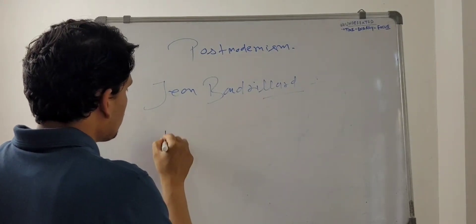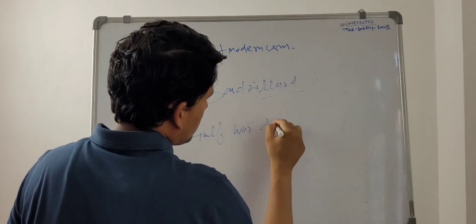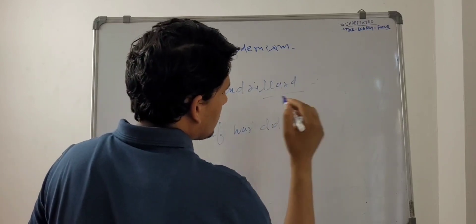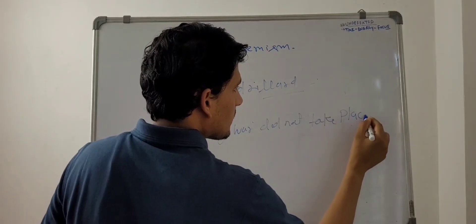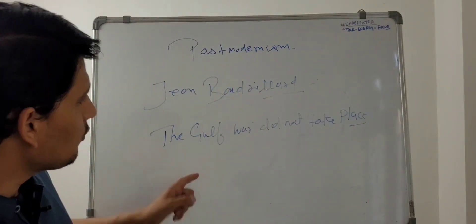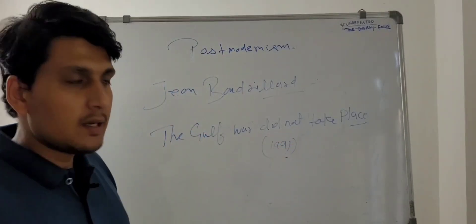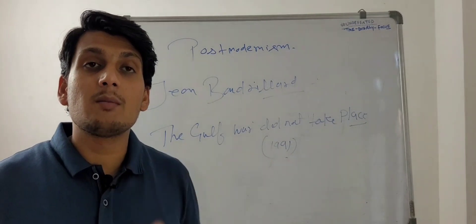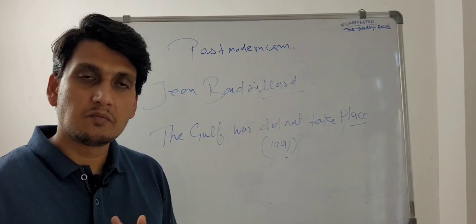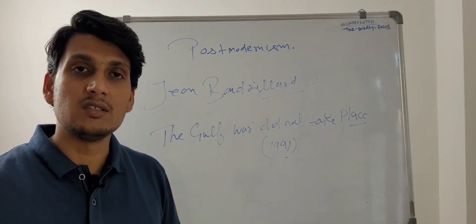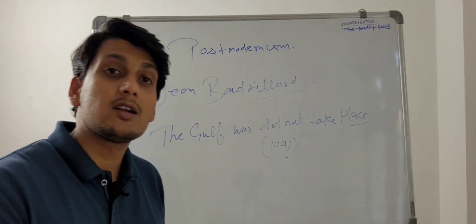The Gulf War - The Gulf War did not take place, 1991. Why did he say that? Because the way it happened, it was not covered by media that way. Gulf War happened when 39 militaries of the countries attacked on Iraq, right? Because Iraq attacked on Kuwait.